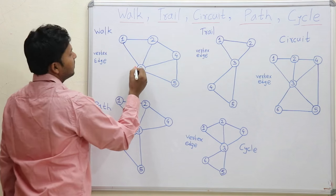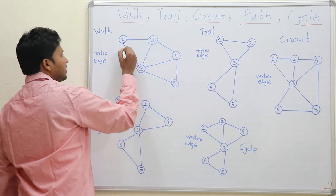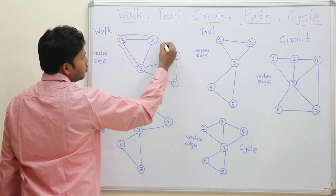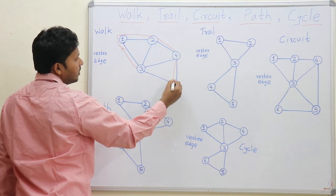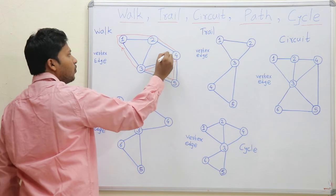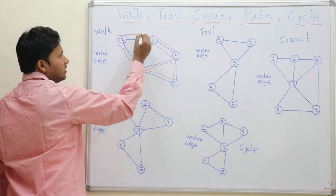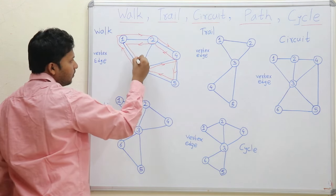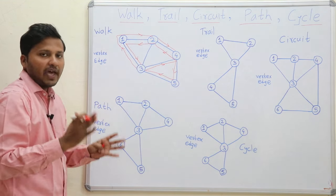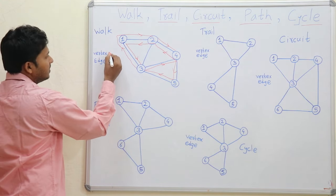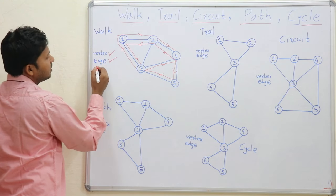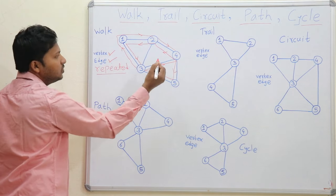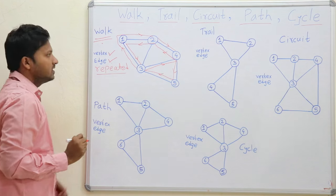When you traverse a graph, you can traverse it in any way. Starting from vertex 3 to vertex 1, then from vertex 1 to 2, then from vertex 2 to vertex 4, then from vertex 4 to 5, 5 to 3, then again from 3 to 4, again from 4 to 2, again from 2 to 1. You can traverse the graph as you wish. In a walk, the vertices in the traversal can be repeated and the edges can also be repeated.